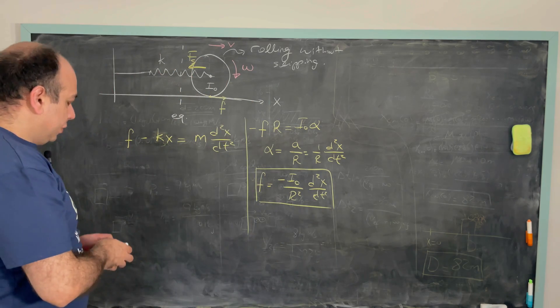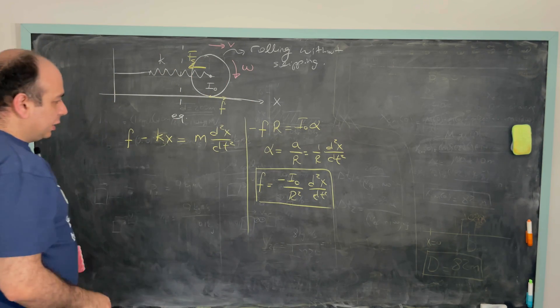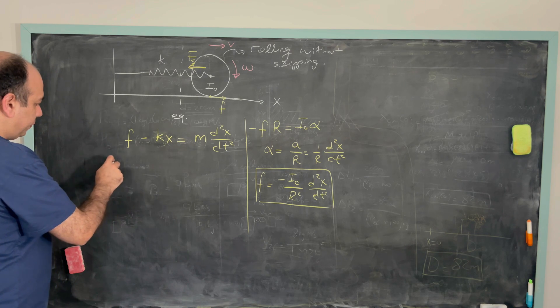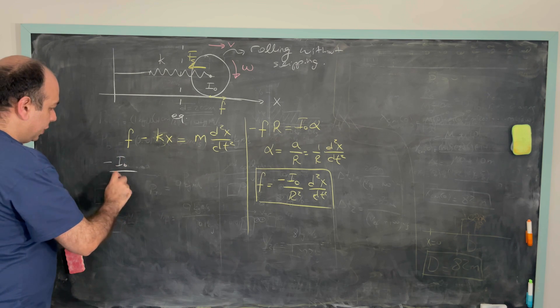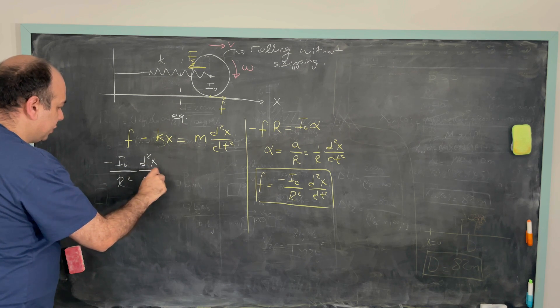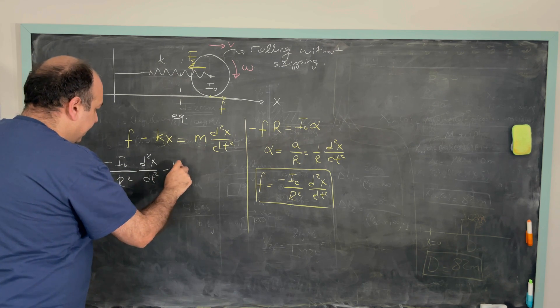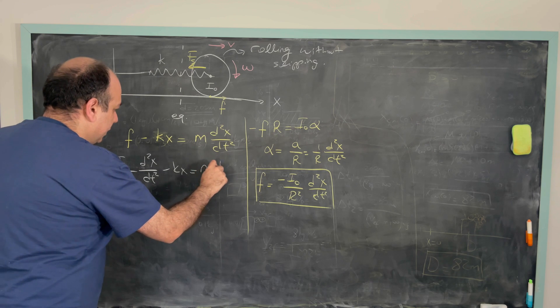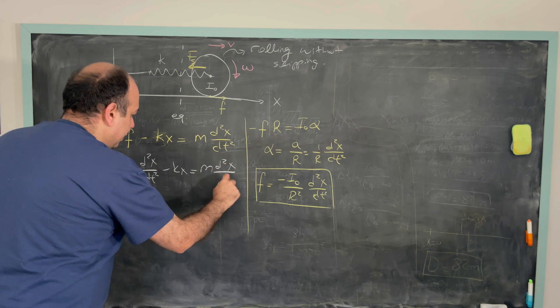We solve for F. So let's put it over here then. So F is equal to minus I0 over r square d square x over dt square. Minus Kx is equal to m d square x over dt square.